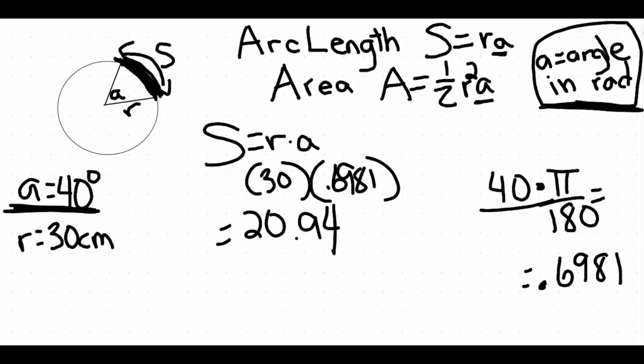Depending on where you grab this problem from or the instructions, they might want you to round to a specific number or specific place value. If you're rounding with significant digits in mind, we do got to keep in mind that our problem was given to us with two significant digits. And if that's the case, then we would have to round this up to 21 centimeters.